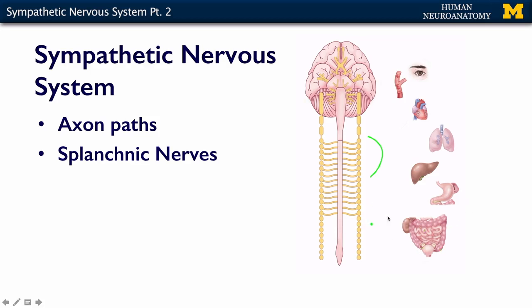Those targets are abdominal targets — everything below the diaphragm and below the ribs, including the entire digestive system. Everything in the pelvis as well, including all of the reproductive organs, is innervated by these splanchnic nerves.